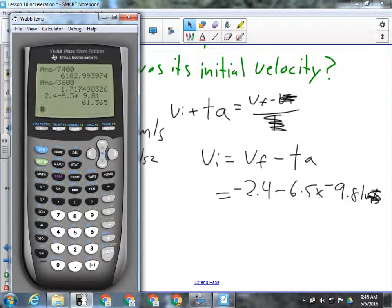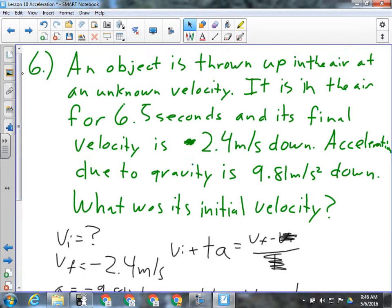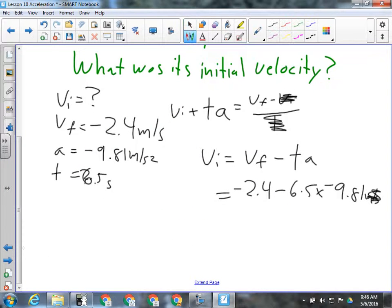All right, so we threw this thing up at 61 meters per second. I think we only have two significant figures there, right? 9.81 has 3, but remember, we always go with our lowest or least accurate number. So we're looking at 61 meters per second up.